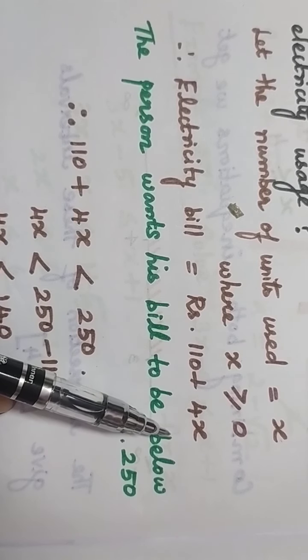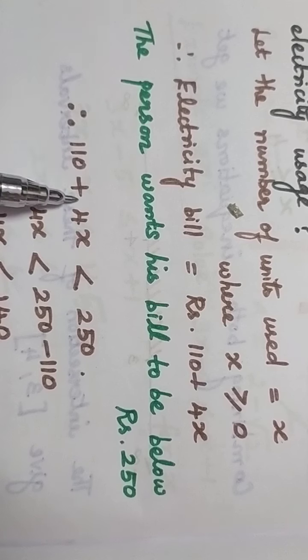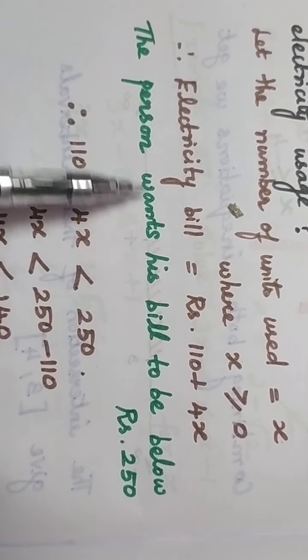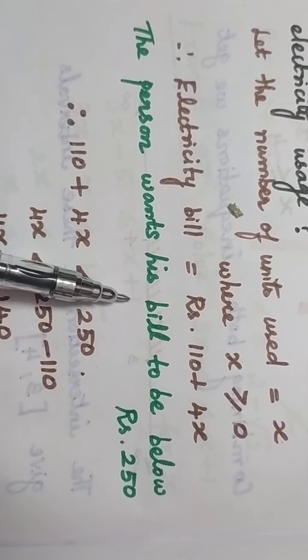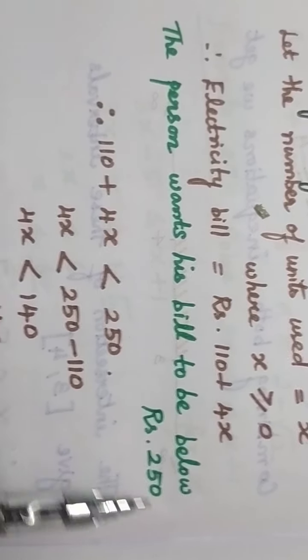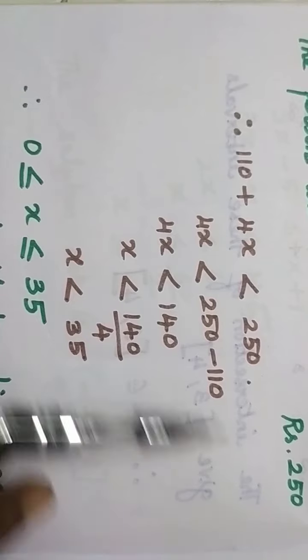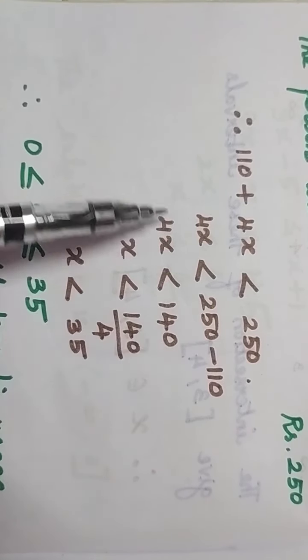Now, under what condition should we find this? The bill should be below 250 rupees. That person wants his bill to be below rupees 250. So we will get an inequality like this: 110 plus 4x is less than 250.